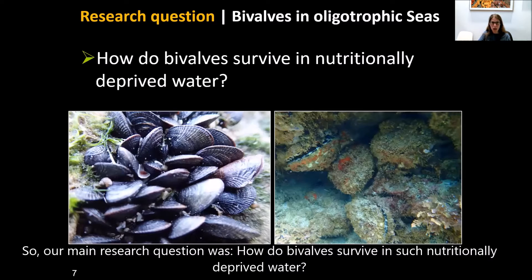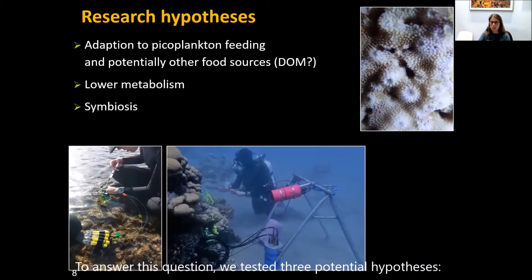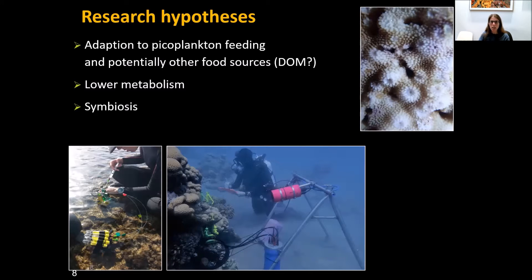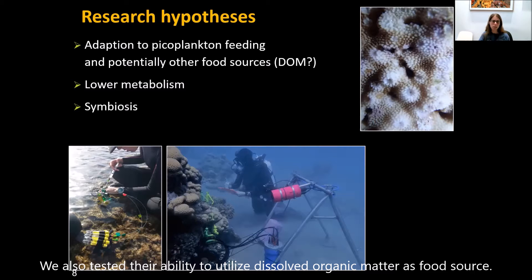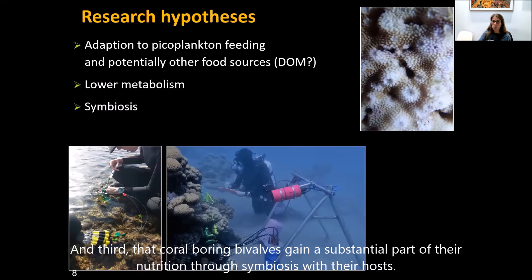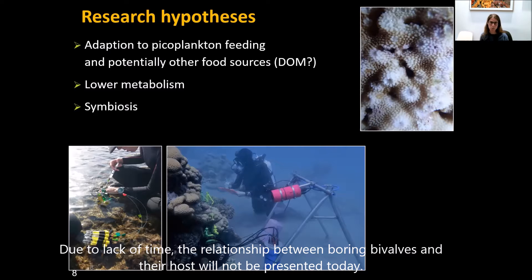Our main research question was: how do bivalves survive in such food-deprived water? To answer this, we tested three potential hypotheses. First, that bivalves in oligotrophic water can feed on smaller particles at the micron and sub-micron level. Second, that they can utilize dissolved organic matter as a food source. Third, that their metabolic rate is much lower than counterparts in more productive water. We also hypothesized that coral-boring bivalves gain substantial nutrition through symbiosis with the host, though due to lack of time that relationship will not be presented today.